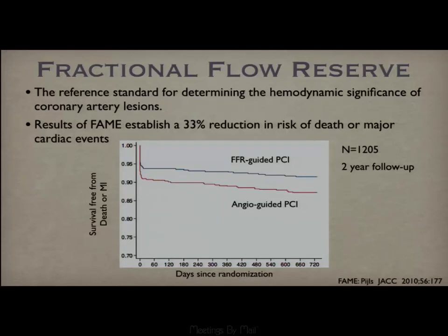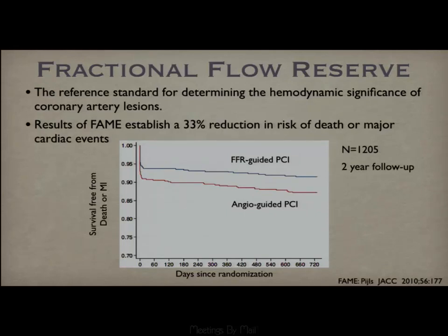FFR is not just a measure — it is a predictor of outcomes. You are seeing here the results of the FAME trial, a very important trial subsequently validated by further investigations in a large multicenter study. It established that if a patient goes to the cath lab and only gets a stent based on an FFR threshold, they will have a 33% reduction in the risk of death or major cardiac events compared to somebody who gets a stent based on the visual appearance of the coronary arteries. This has essentially changed the paradigm for cardiologists in the cath lab. They now measure FFR, and only those patients with a positive FFR get stented, resulting in a measurable and significant long-term improvement in outcomes.